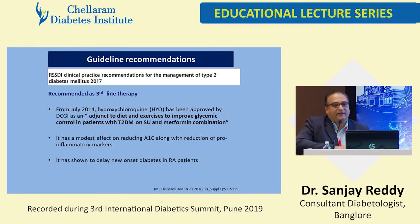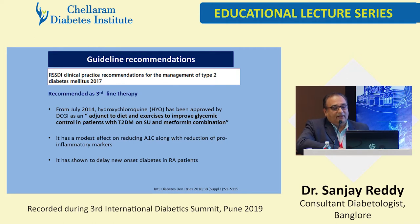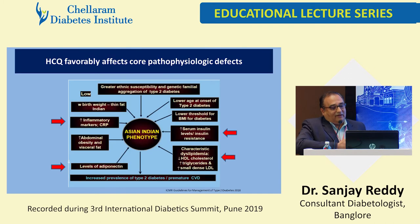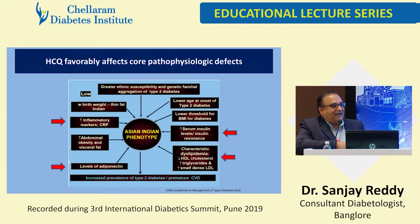Do we have any guideline recommendations? In 2017, RSSDI clinical guideline recommendations came on the use of hydroxychloroquine. From July 2014, hydroxychloroquine has been approved by DCGI as an adjunct to diet and exercise to improve glycemia in patients with type 2 diabetes on sulfonylurea and metformin combination. It has a modest effect on reducing A1C along with reduction of pro-inflammatory markers. It has also been shown to delay new-onset diabetes in rheumatoid arthritis patients. Looking at the Asian Indian phenotype, if lifestyle measures are not possible, HCQ is one agent we can use.